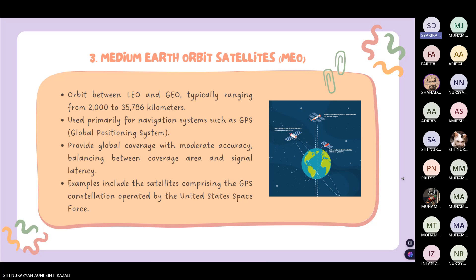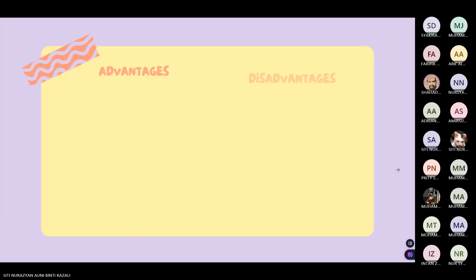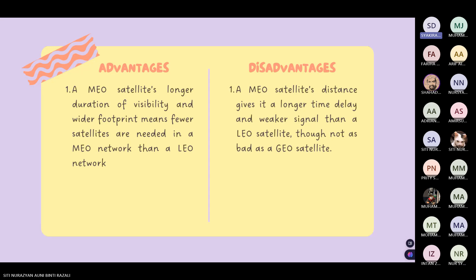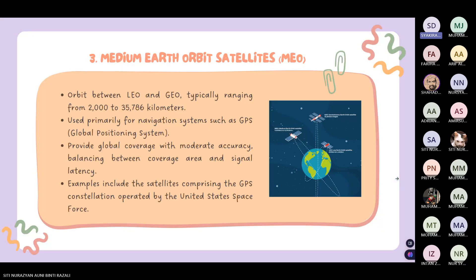The third type is medium Earth orbit satellites, MEO. They orbit between LEO and GEO, typically ranging from 2,000 to 35,786 kilometers. They are used primarily for navigation systems such as GPS, Global Positioning System. They also provide global coverage with moderate accuracy, balancing between coverage area and signal latency. Examples include the satellites comprising the GPS constellation operated by the United States. MEO satellites offer a good balance between coverage, latency, and transmission speeds, making them suitable for global internet connectivity, navigation, and mobile communication.